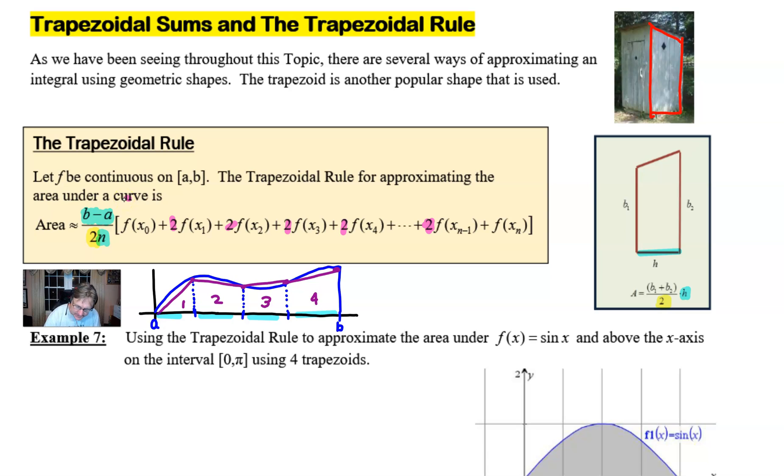And the reason is because these outside values do not have double usage. In other words, we're only going to use this one time here, and we're only going to use this base one time over here. That serves as those two. On the inside of this guy, as you can see, this particular distance here is going to serve as both the base of trapezoid 1 and the base of trapezoid number 2.